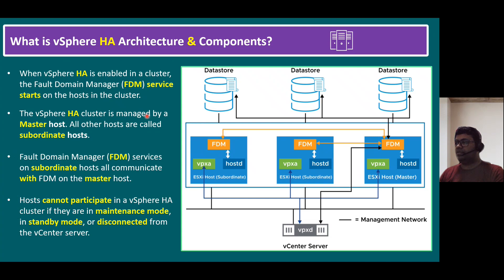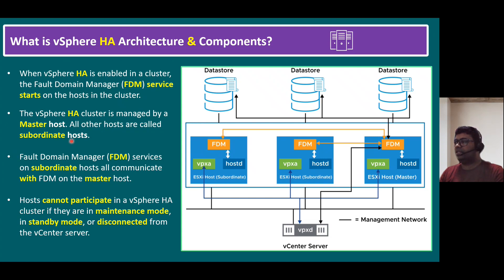Within the cluster, one ESXi host is elected as the master host — like a team leader. All other hosts are called subordinate hosts. The FDM services on all subordinate hosts communicate with the FDM on the master host. As shown in the diagram, each subordinate host's FDM communicates to the master host.